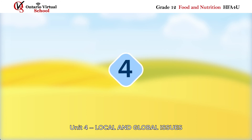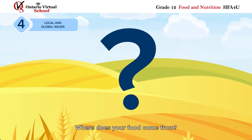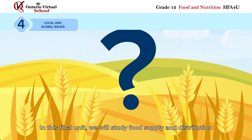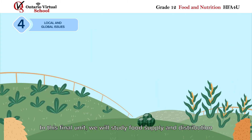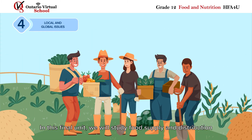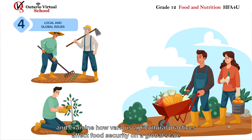Unit 4 – Local and Global Issues. Where does your food come from? In this final unit, we will study food supply and distribution, and examine how various agricultural practices affect food security on a global scale.